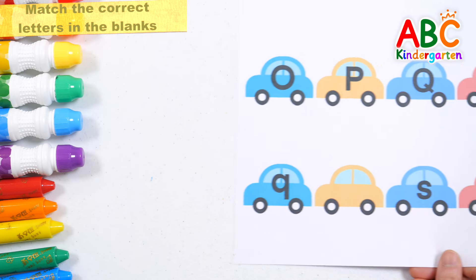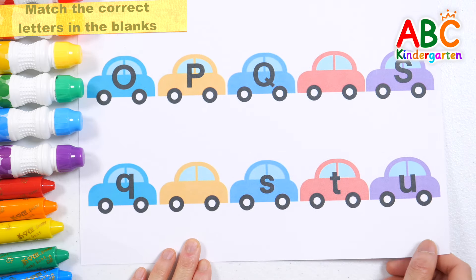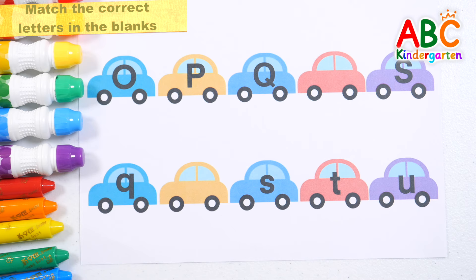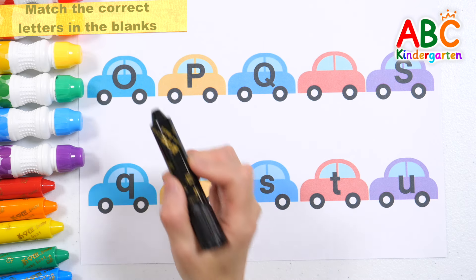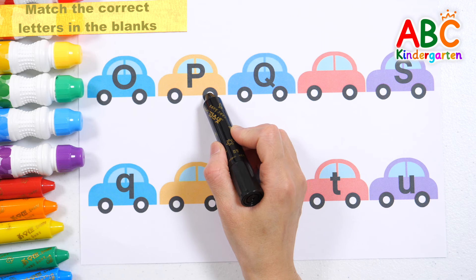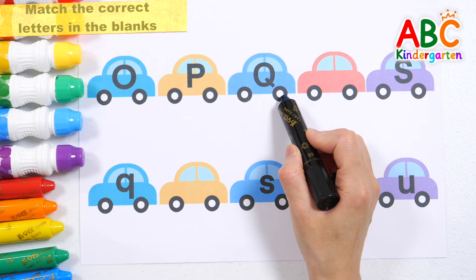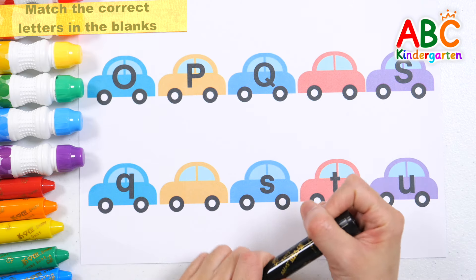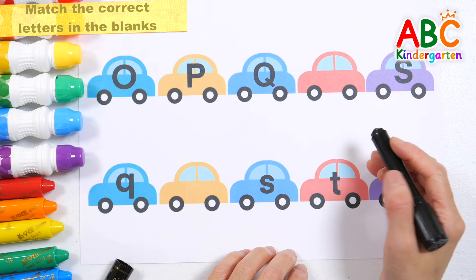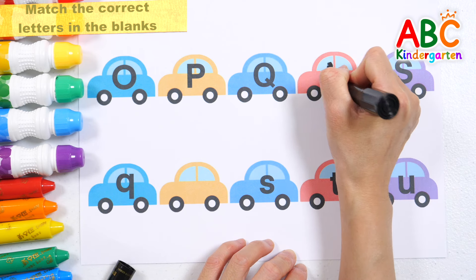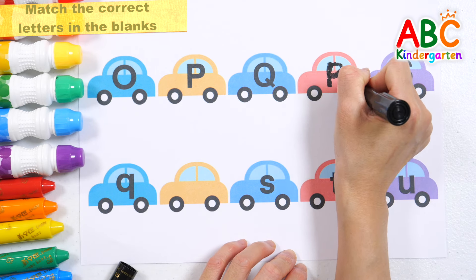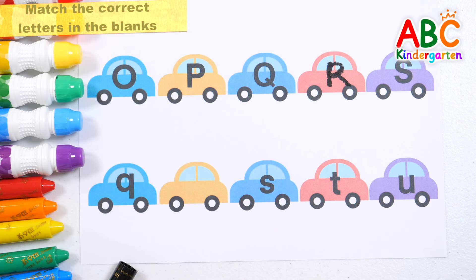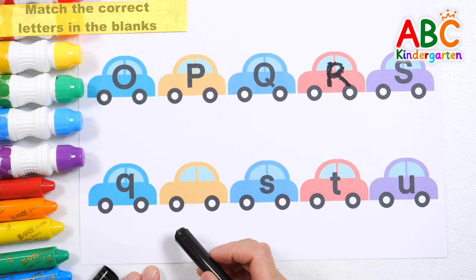Cars of various colors. Let's read the words written on the car and fill in the blanks. Uppercase O, uppercase P, uppercase Q. What is the correct letter for a red car? That's right! Uppercase R. Uppercase S. Shall we read the text one more time and fill in the blanks?